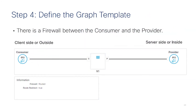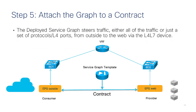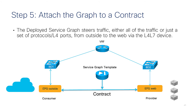Then you define the graph template, which specifies that the previously defined cluster of devices sits between consumer and provider connectors or EPGs, and that it should be configured with a redirect. A key step is associating the graph template with a contract subject. The contract can be predefined or new, and the subject may apply to all IP traffic or just specific ports such as 80, 443, and so on.